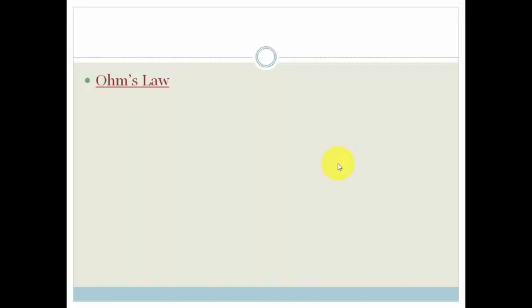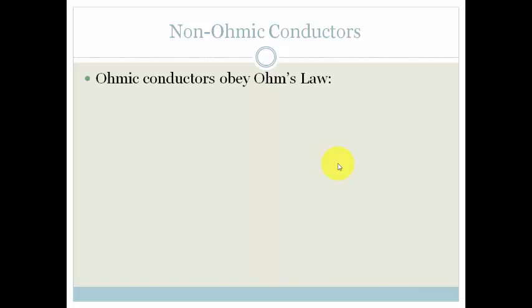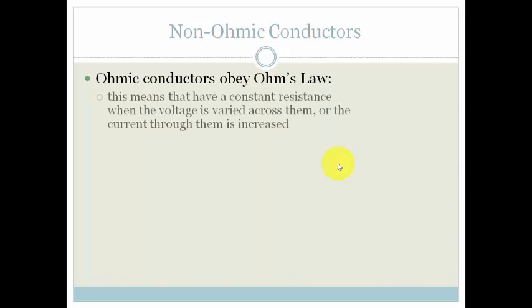Right, now that you've learned all about Ohm's law, let's talk about the different types of conductors you get. So you get Ohmic and non-Ohmic conductors. Ohmic conductors obey Ohm's law. In other words, this means there is a constant resistance when the voltage is varied across them or the current through them is increased. So it makes no difference. And they obey Ohm's law. Examples of this are your circuit resistors and Nichrome wire. In other words, things that we use as resistors to slow down the current or that we need to do specific tasks within a circuit. They tend to be Ohmic conductors.